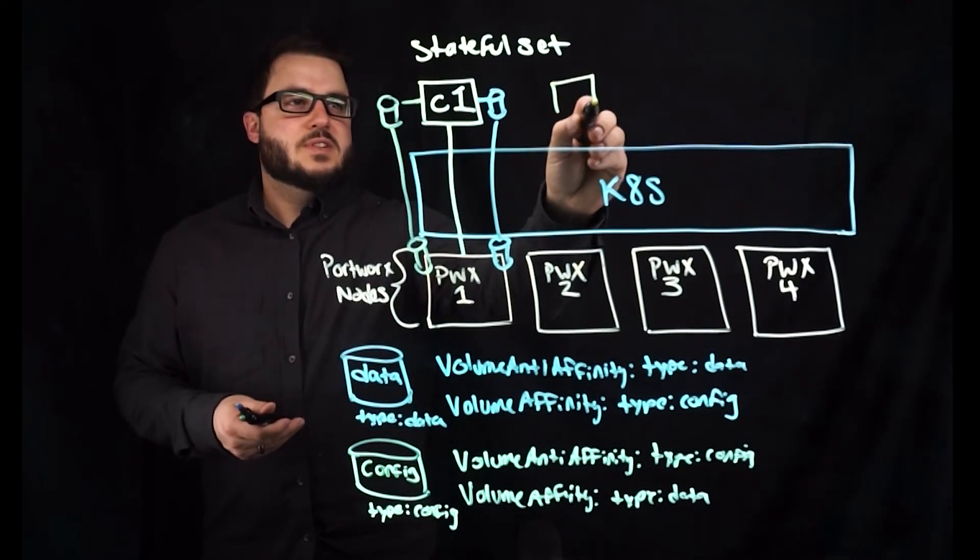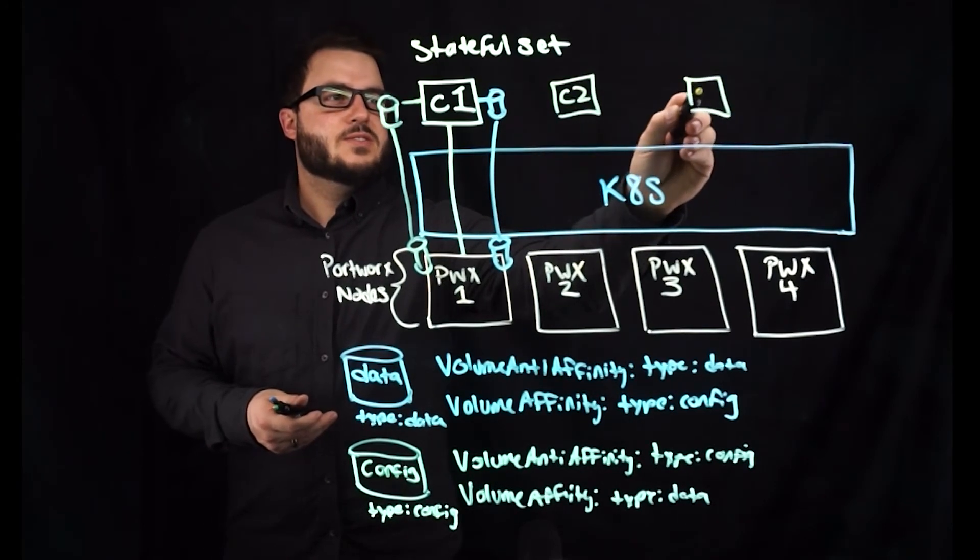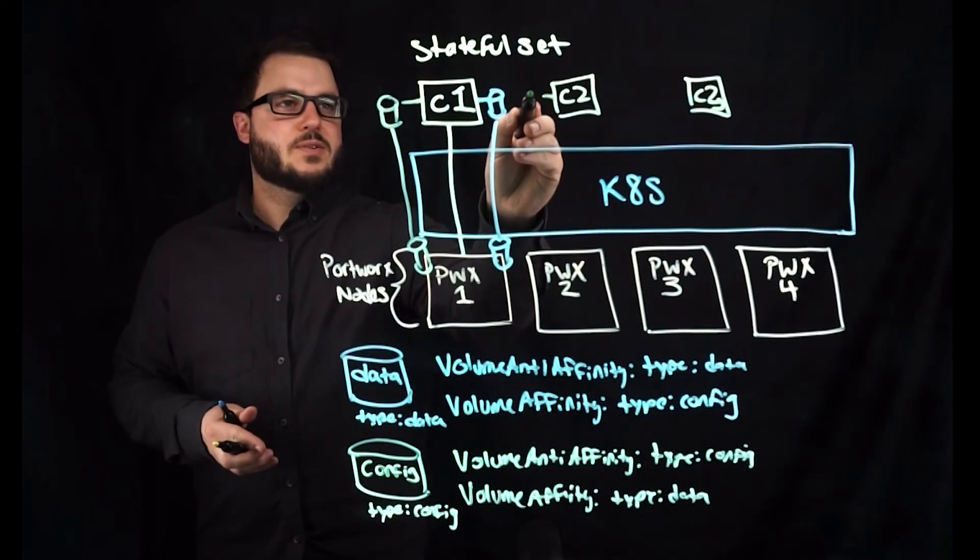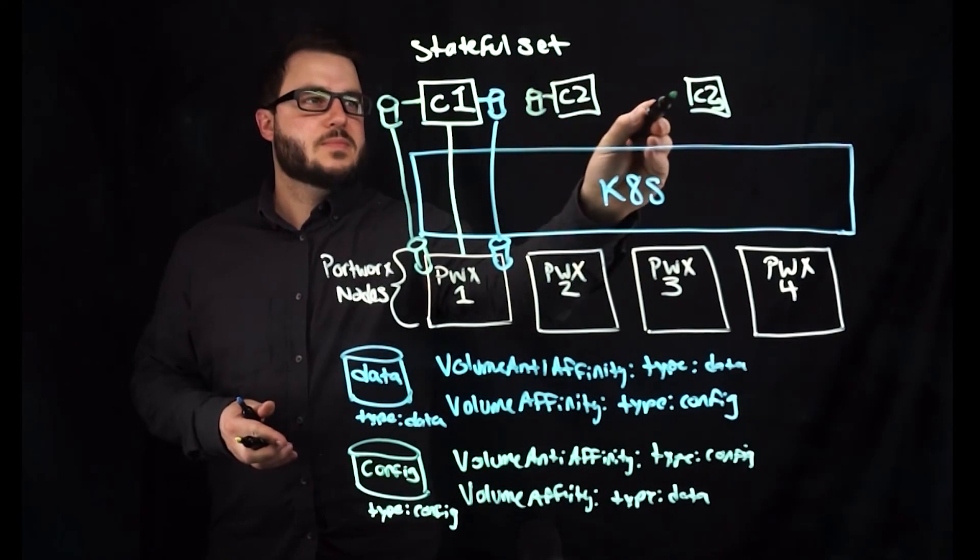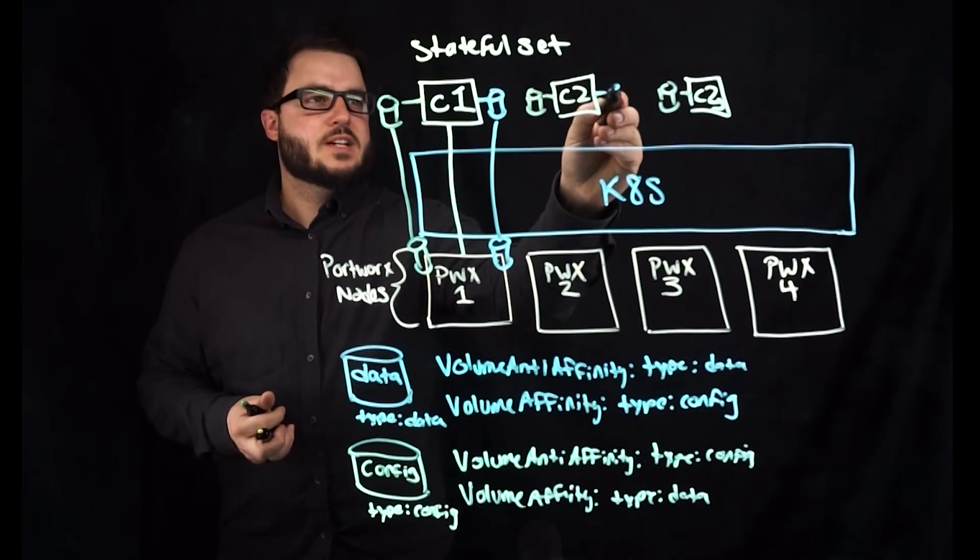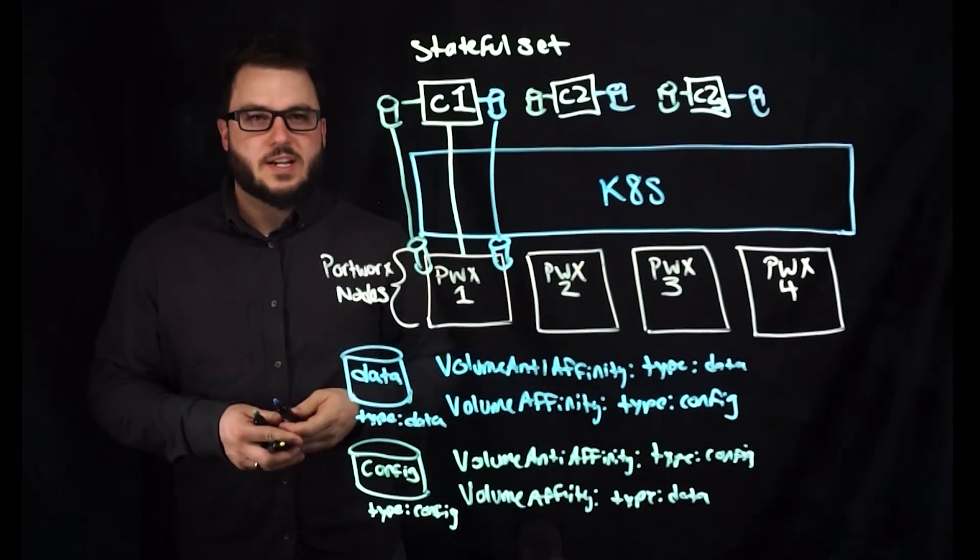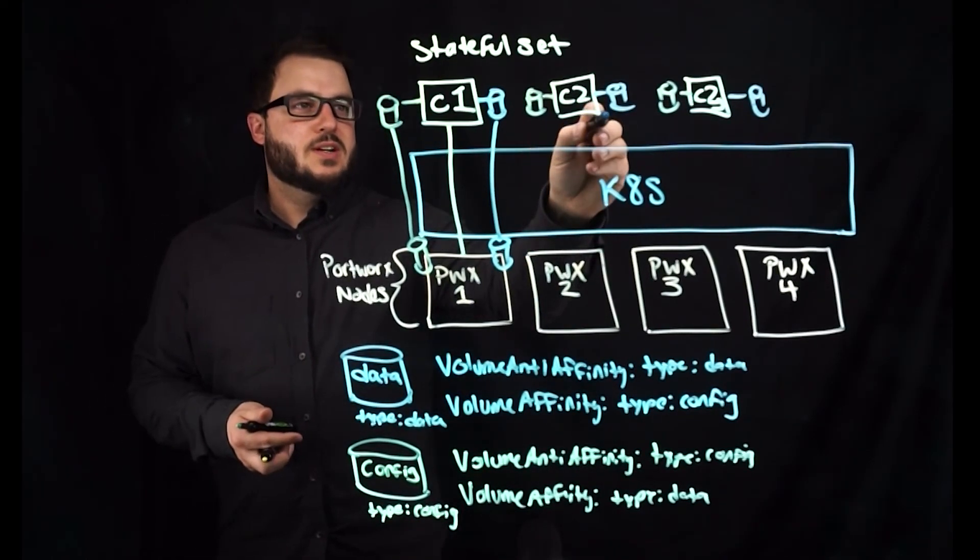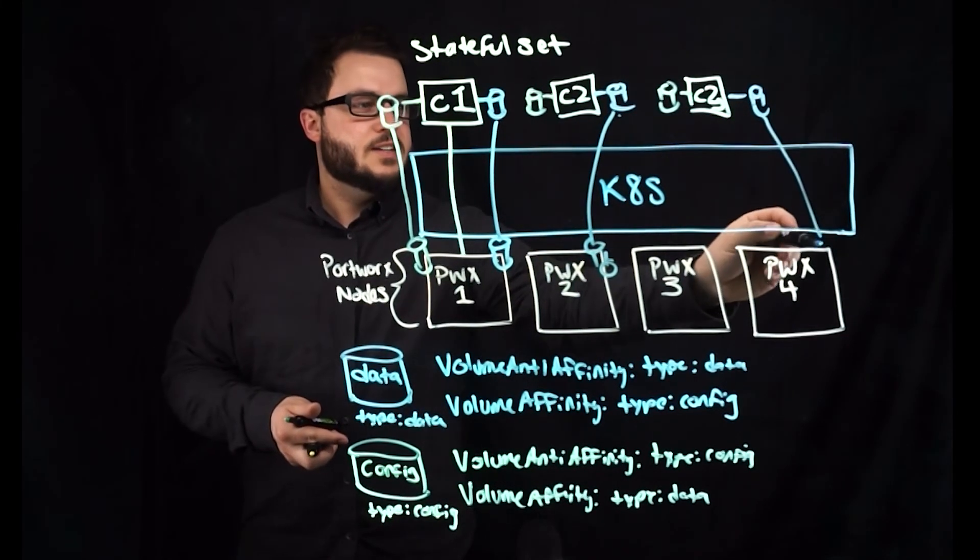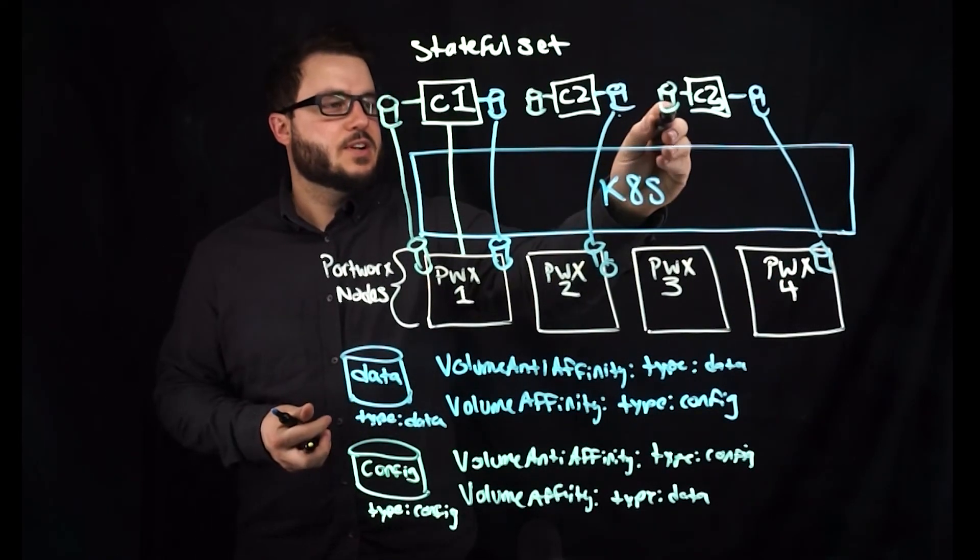Once that's done, it moves on to the next Cassandra node and onto the next Cassandra node and does the same thing. So each one will have its own configuration volume here and its own data volume. And the volume placement strategy rules for anti-affinity and affinity will make sure that the volumes land on the same node as their configuration volume.